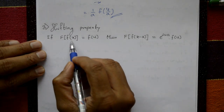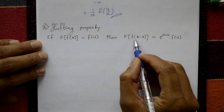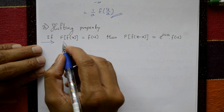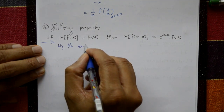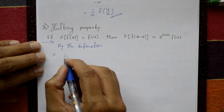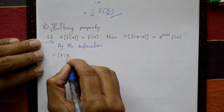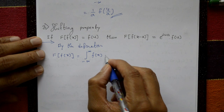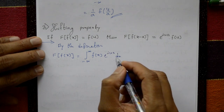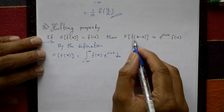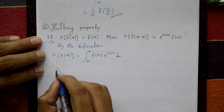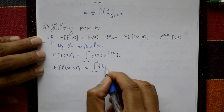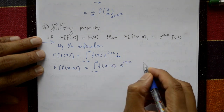Third property: shifting property. If F of f of x equals F of u, then F of f of x minus a equals e to the power i u a times F of u. Proof by definition: F of f of x minus a equals integration from minus infinity to plus infinity of f of x minus a times e to the power i u x with respect to x.